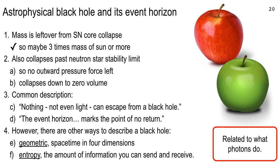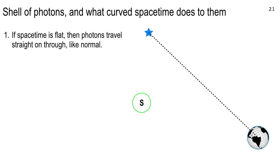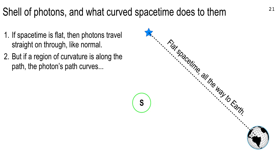Let's look at a little shell of photons and at some lensing that the sun does, then apply that to black holes. Spacetime is flat here: there's the Earth, you're looking at a blue star, and photons come burning straight in. The Sun is over to the left — you're not close enough to get much gravitational curvature from it. So it's flat spacetime all the way to the Earth.